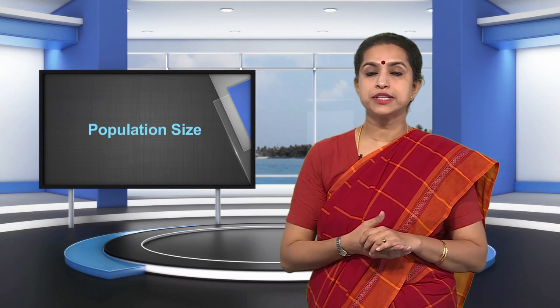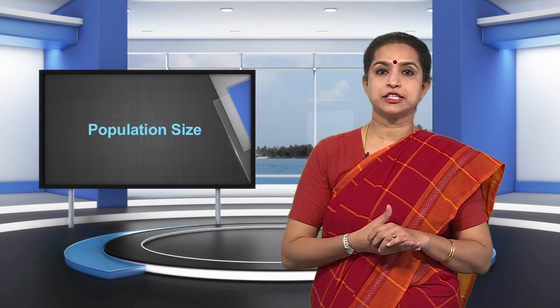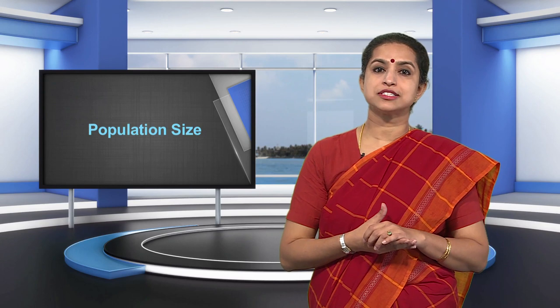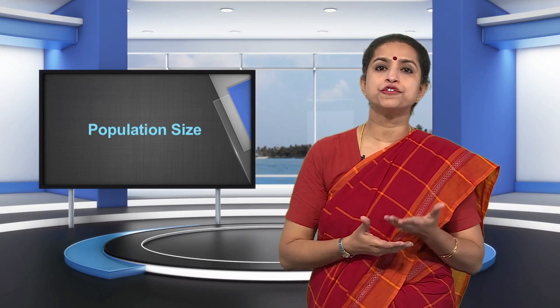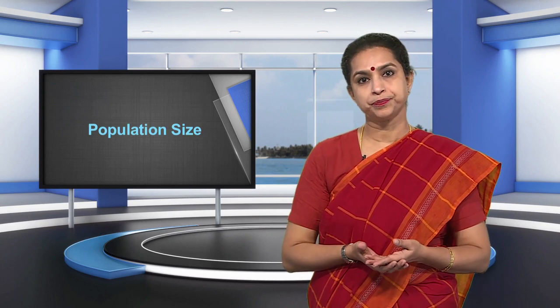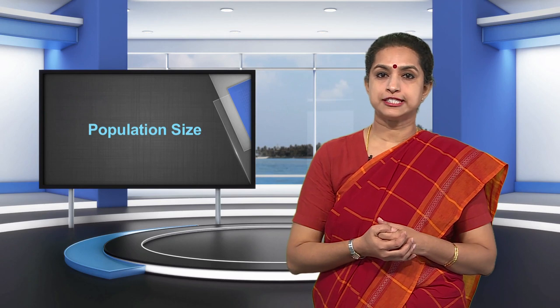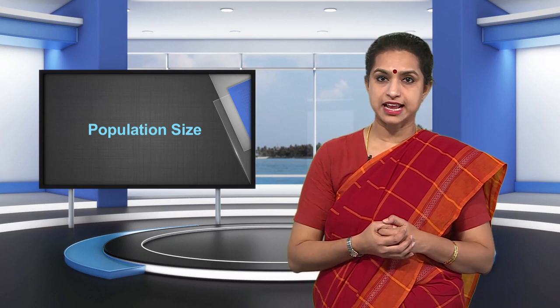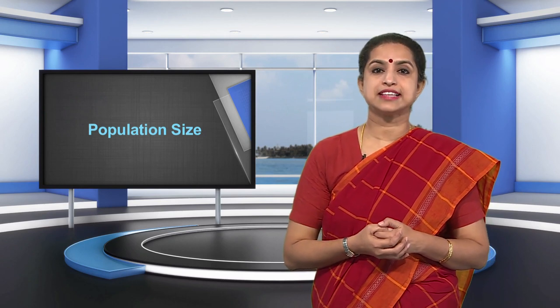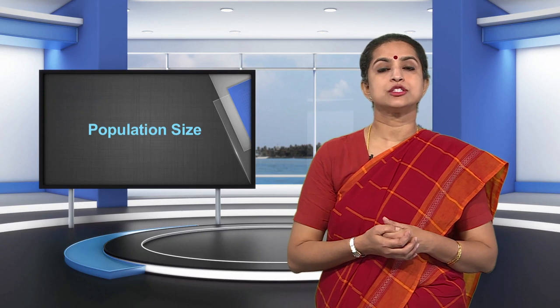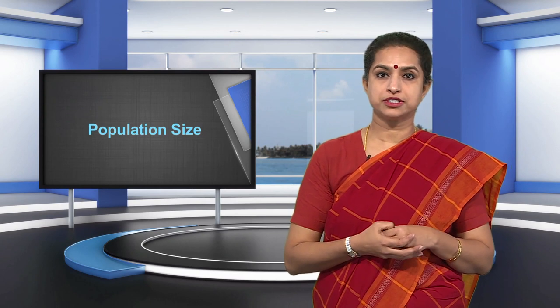Countries with low density of population may choose a lower number as the cutoff figure compared to densely populated countries. In Denmark, Sweden, and Finland, all places with a population size of 250 persons are called urban. The minimum population for a city is 300 in Iceland, whereas in Canada and Venezuela it is 1,000 persons.